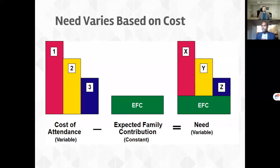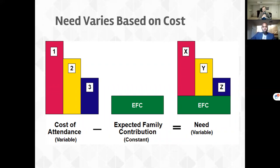This graphic shows how need varies based on cost. If we have schools one, two, and three — school one being most expensive, school three being most affordable — and all schools use your same expected family contribution and all meet 100% of your need, your out-of-pocket cost is going to be the exact same at all three schools, regardless of their sticker price.